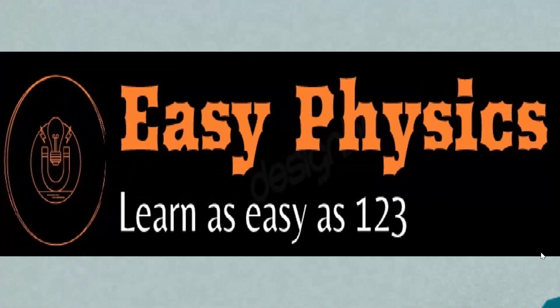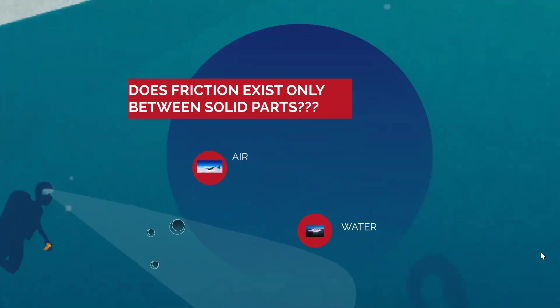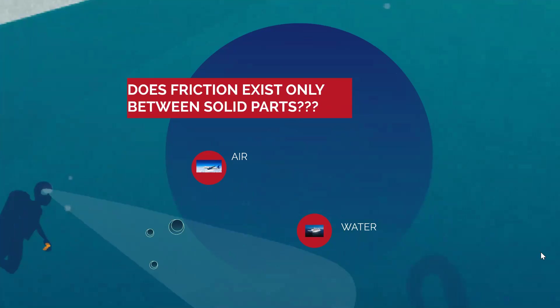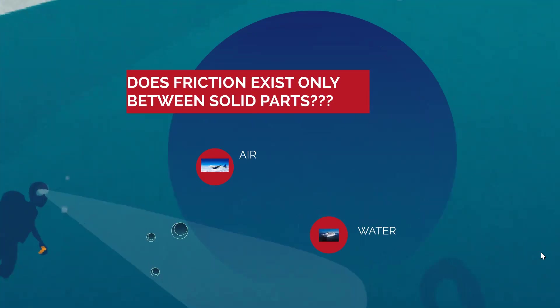Through this video we are going to discuss about fluid friction. Through our previous videos we have already discussed about different types of friction, namely static friction, sliding friction, rolling friction and so on. The specialty was all these were the opposite force existing between solid parts of objects. But do you think that friction exists only between solid parts? Obviously not.